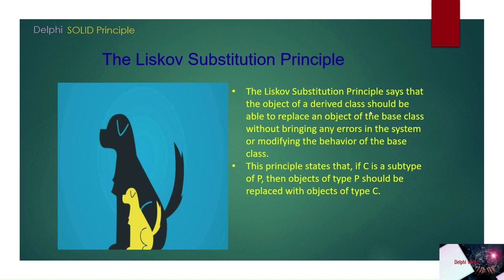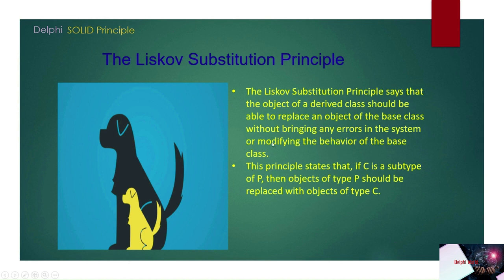Objects of the derived class should be replaceable with objects of the base class without causing any errors in the system or modifying the behavior of the base class. As you can see in the picture, if this is the parent and this is the child, the parent class object should be replaceable with the child class object. Whatever features are in the parent class should also exist in the child class.